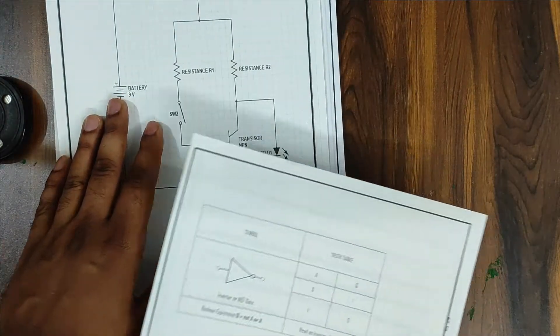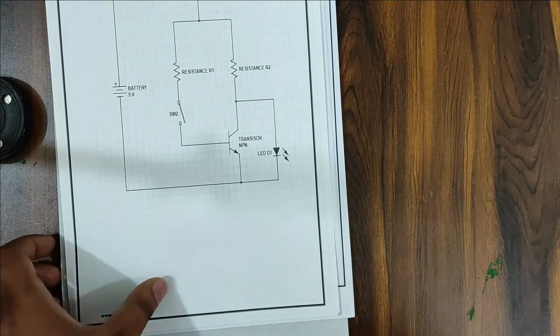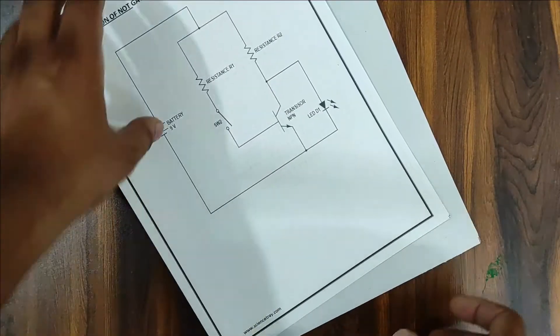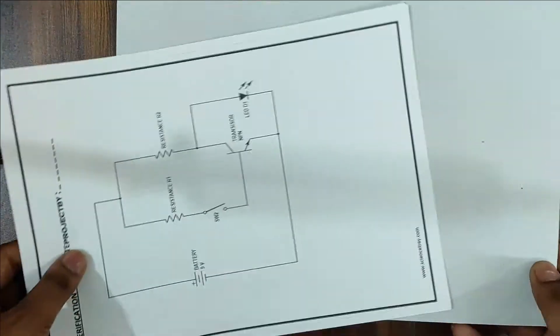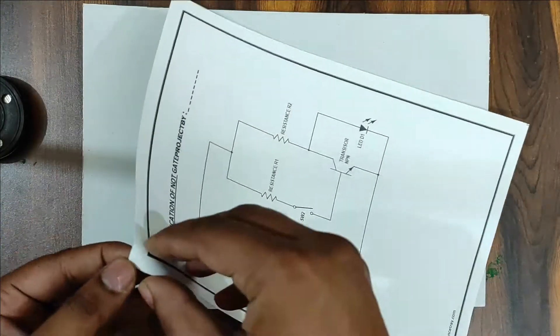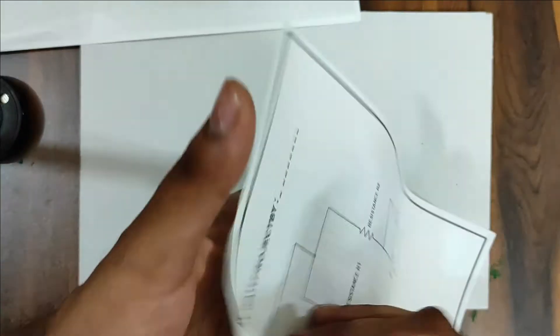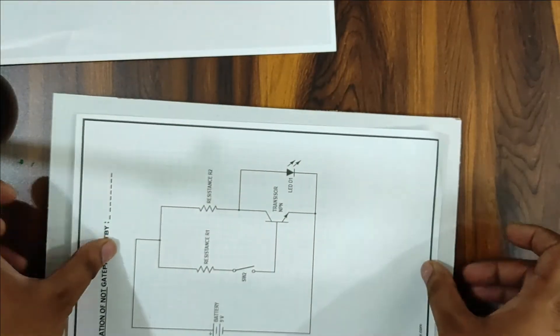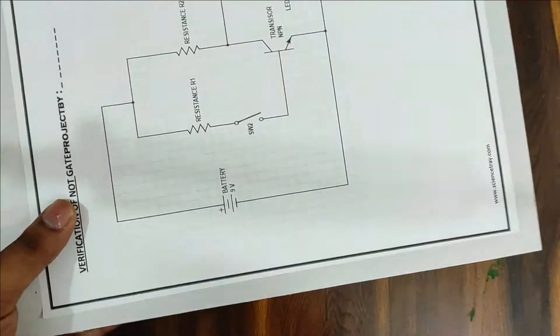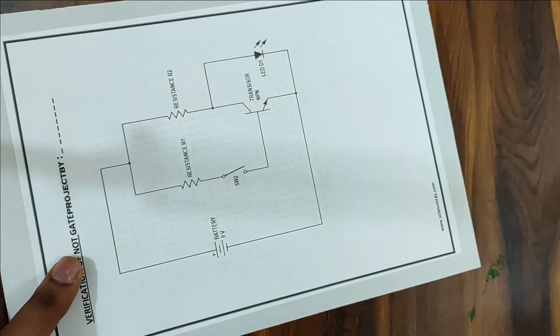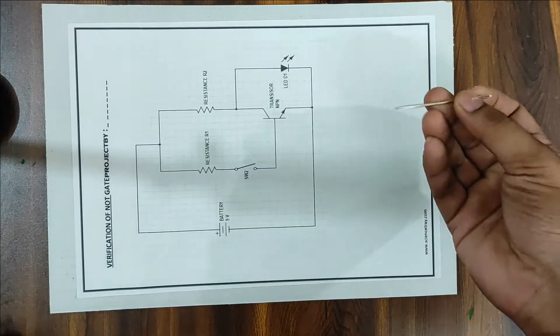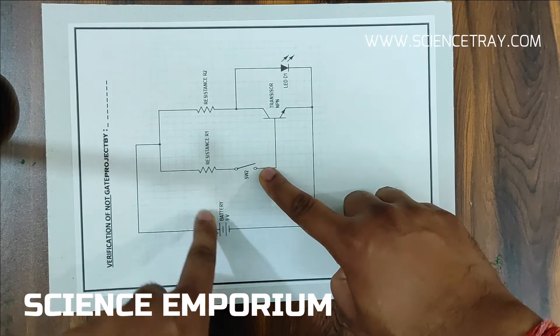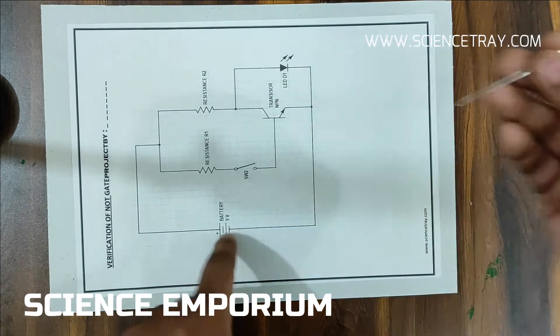Now we will see circuit construction. We will paste it on this cardboard sheet. We will use the components here on the panel. For two holes we will use the resistances and battery, and here we will use three holes for the transistor.